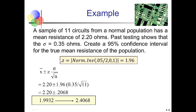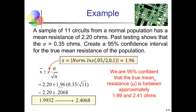Using norm inverse of 0.025, comma 0, comma 1, and taking the absolute value, we get 1.96. Filling in: Z-critical is 1.96, sample mean is 2.2, population standard deviation is 0.35, divided by the square root of 11. The margin of error simplifies to 0.2068. Subtracting gives a lower bound of 1.9932 ohms; adding gives an upper bound of 2.4068 ohms. We're 95% sure the true mean resistance is between 1.99 and 2.41 ohms.